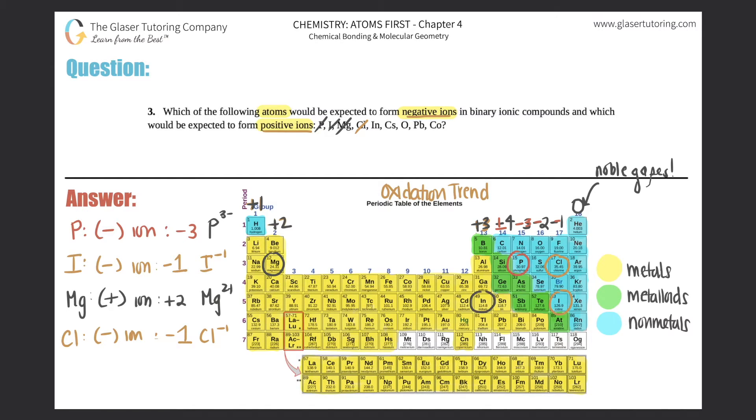Indium is in the positive three category, so this would be a cation, a plus ion, more specifically plus three. Cesium is a plus ion, it will always want to form a plus one charge.